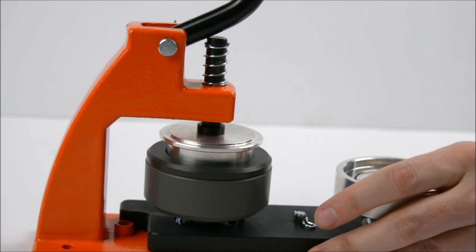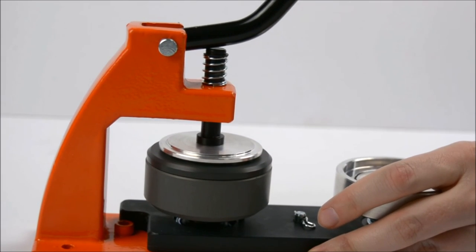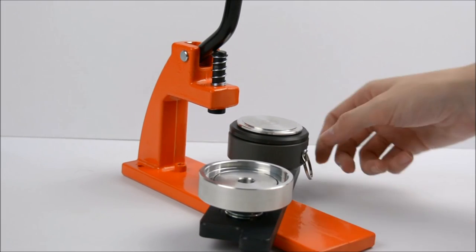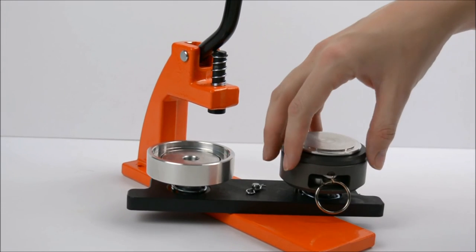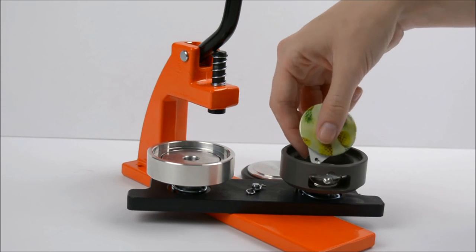As you can see, the top hat should be pushed all the way down onto the die to ensure the keyring makes correctly. Lift off the grey ring and top hat and your keyring is complete.